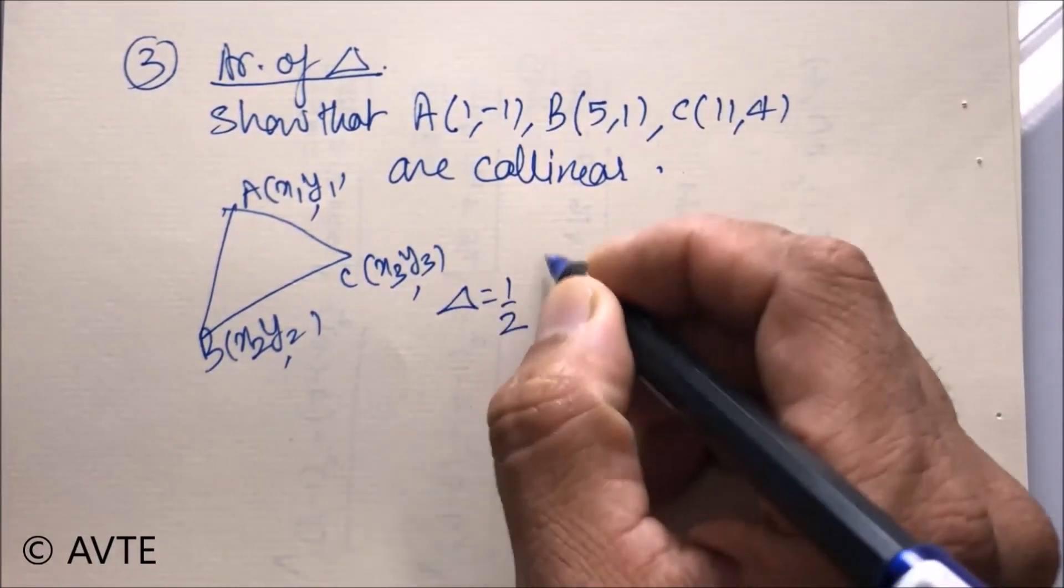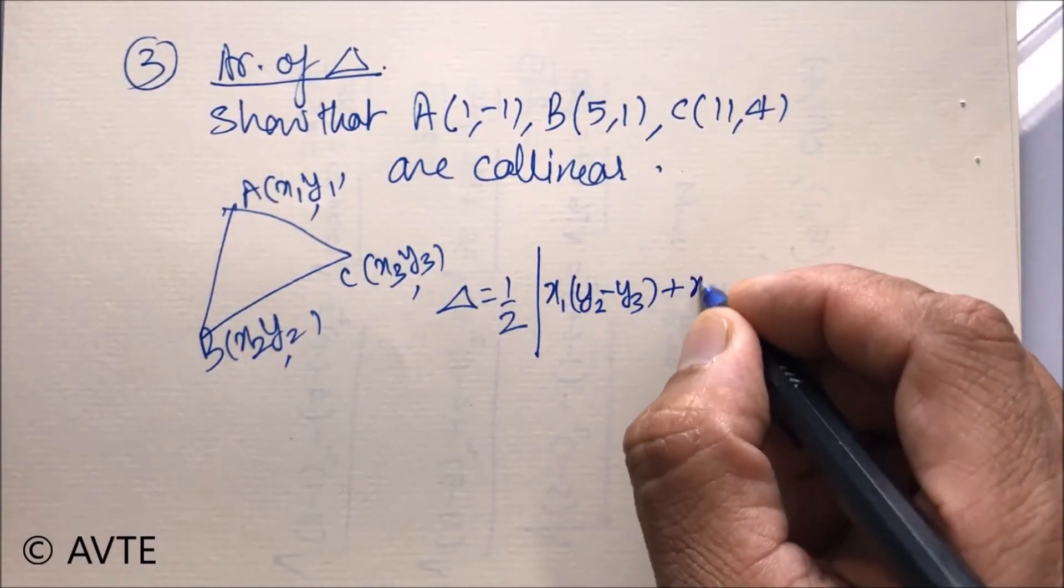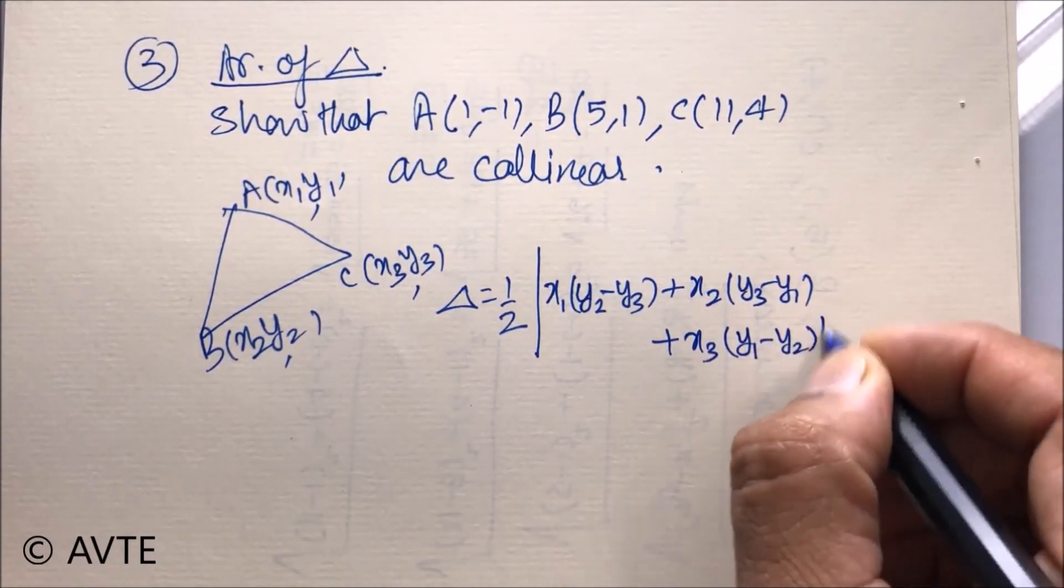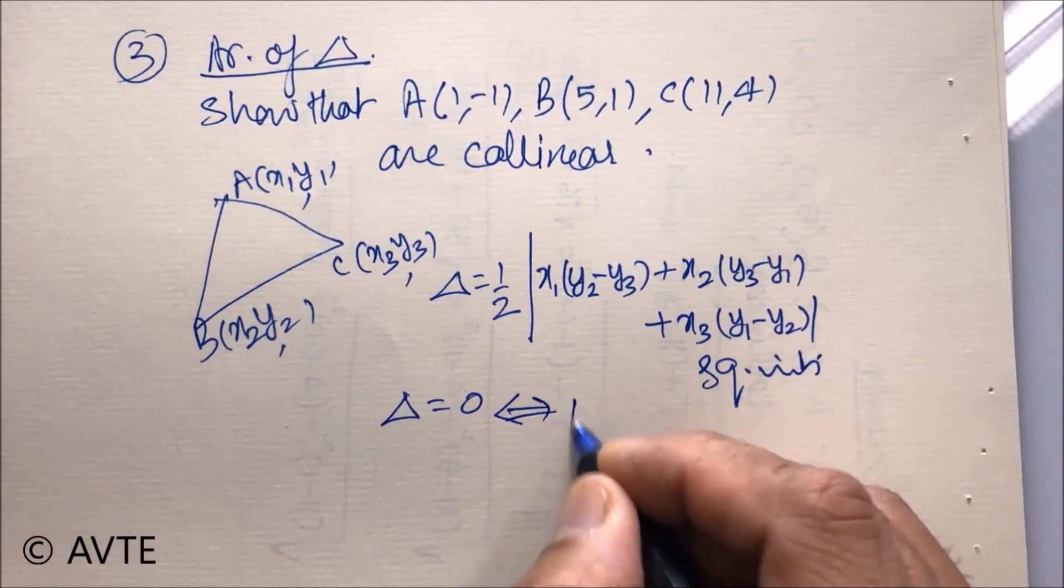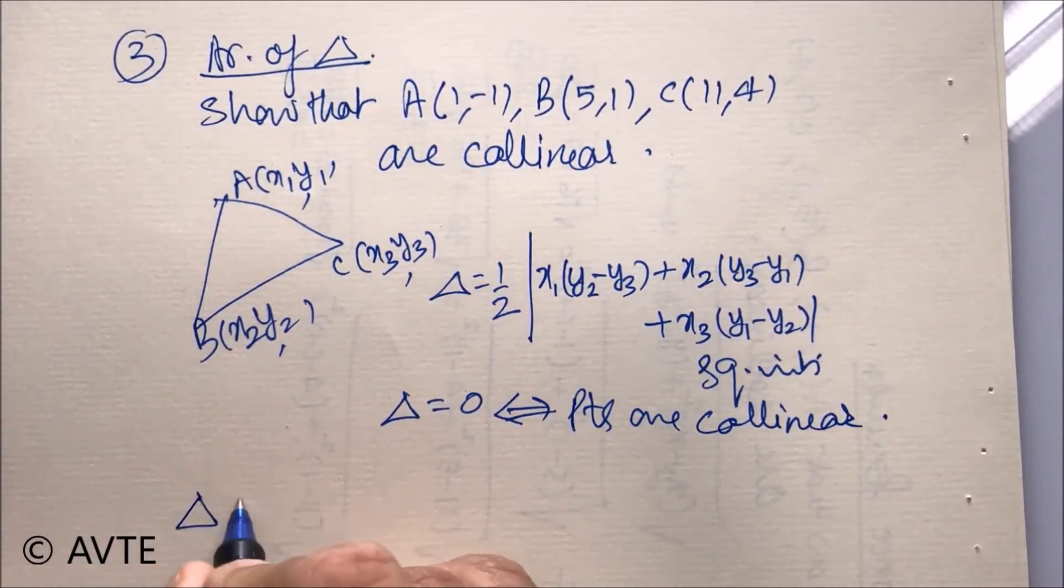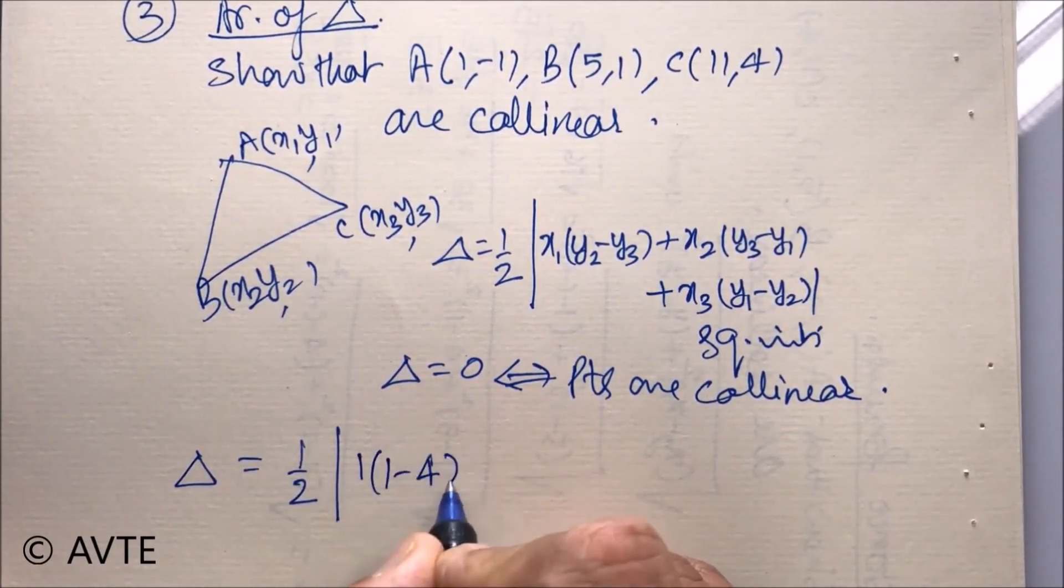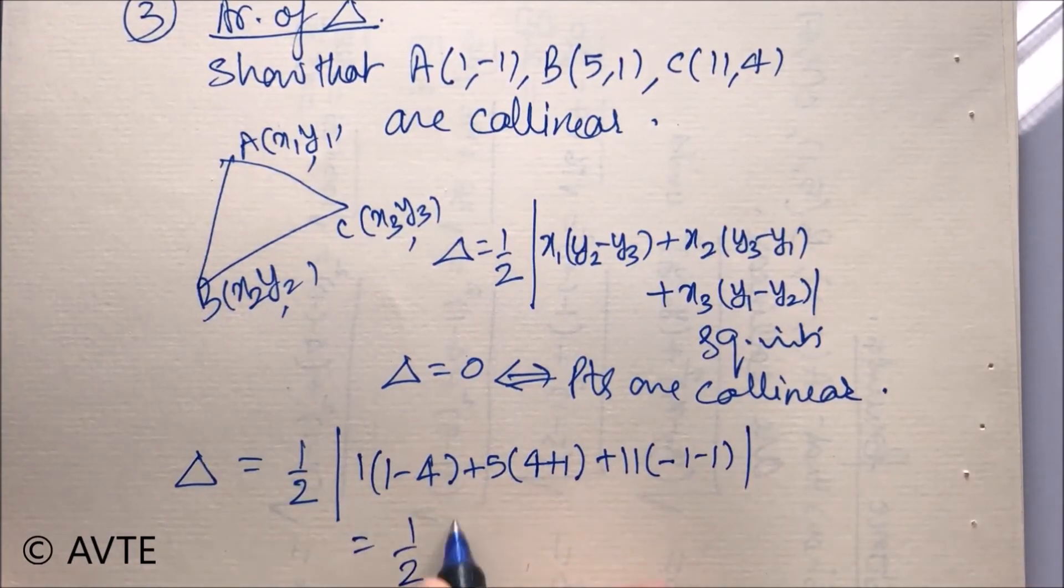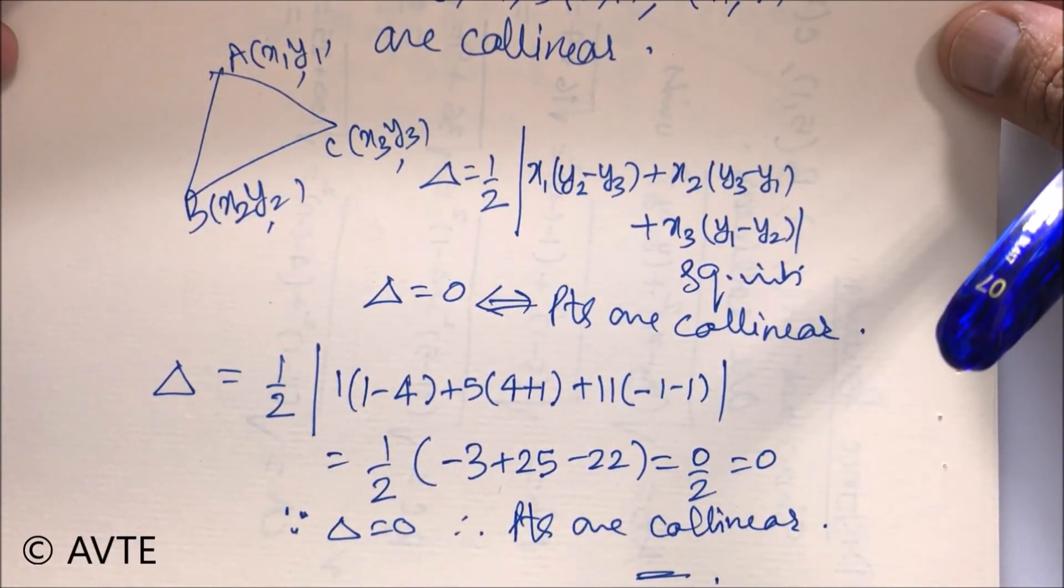then area of the triangle is given by 1 by 2, modulus to make it positive, x1 within the bracket, x2, x3 within the bracket, y1 minus y2, square units, because this is the area. And if area is 0, means that points are collinear. So we'll use this logic. So we're calculating the area by using the coordinates. And because delta is coming 0, points are collinear.